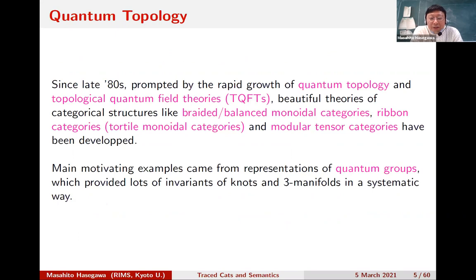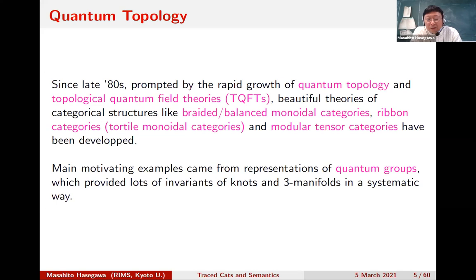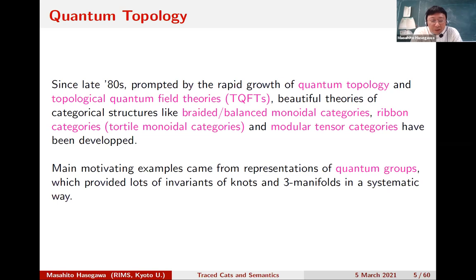On the mathematics side, there is a nice area of quantum topology and TQFTs with very sophisticated categorical structures: braided, balanced monoidal categories, ribbon categories (also called tortile monoidal categories), and modular tensor categories. Good motivating examples came from quantum algebra and quantum groups, which give lots of nice invariants of knots and 3-manifolds in a very uniform systematic way. Many of my colleagues in Kyoto work on this area.